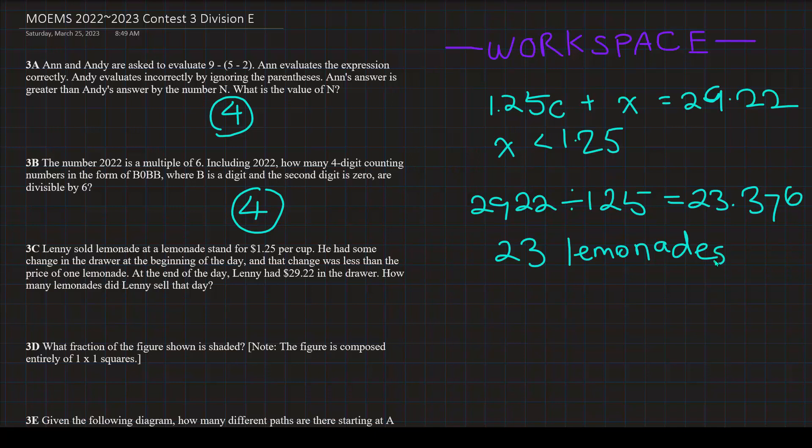Now, what is the question asking? It's saying, how many lemonades did Lenny sell that day? And, since 23 lemonades is the answer we got, I feel confident in just putting it into the answer box. But, let's do some checking first. Is this reasonable? Well, let's substitute 23 lemonades as C. Okay? So, 1.25 times 23, what does that equal? That would equal $28.75. Now, let's find the difference between 29.22 and 28.75, which is $0.47. Is that less than the price of one lemonade? Yes. So, our final answer would be 23.